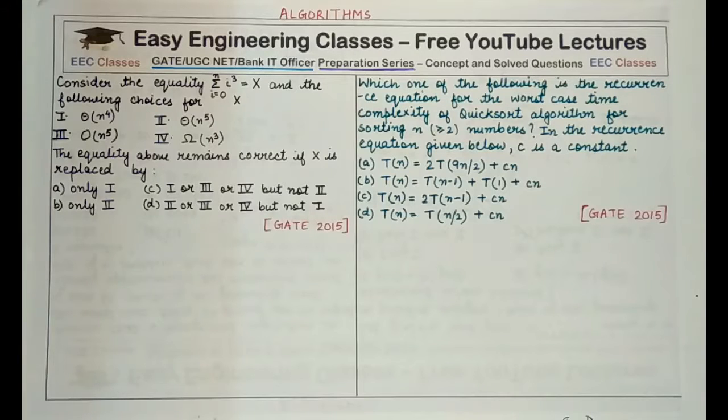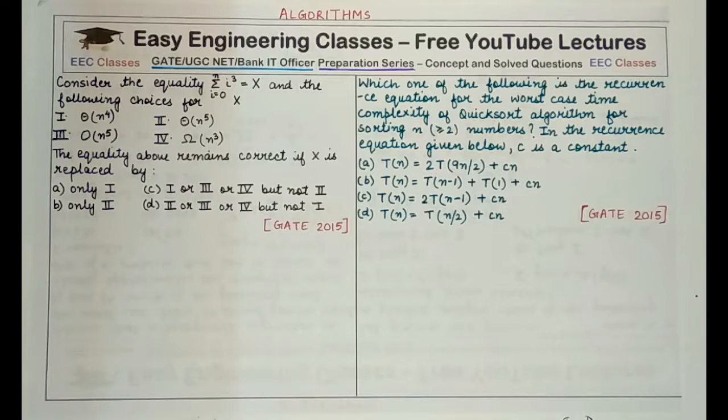Hello everyone, welcome to easy engineering classes. We are taking forward our preparation series with another lecture in algorithm subject. Both these questions that we'll solve today in this lecture, they were a part of GATE 2015 paper and one of them focuses on time complexity of quicksort and the second one focuses on upper bound or lower bound of a particular expression or equality.